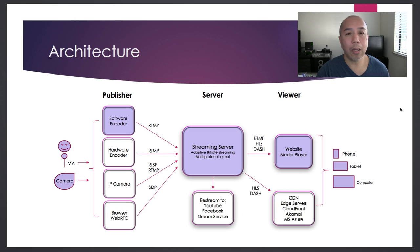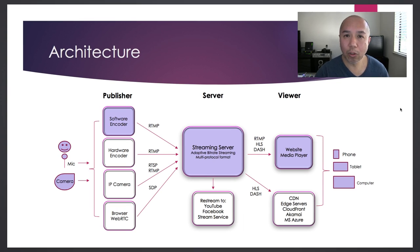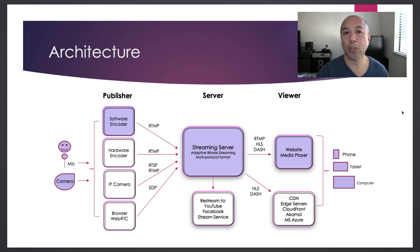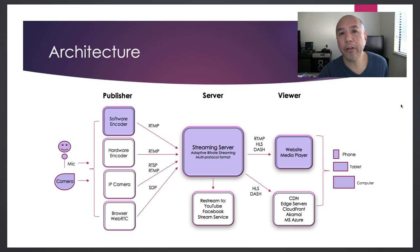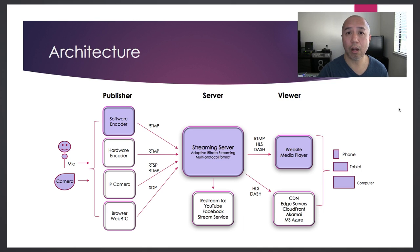In the case of Wowza, a single server is called the origin server. For scalability — say you have a thousand users and your CPU is maxed out — you can upgrade to a higher-spec server, or you can create edge servers located in different parts of the world, strategically placed in geographic areas where your viewers are. These edge servers talk back to the origin server.